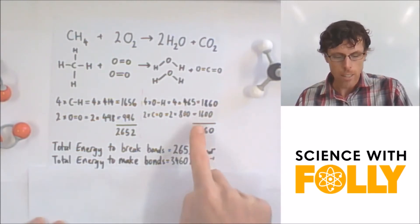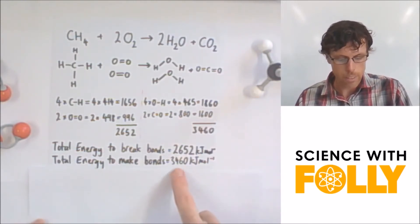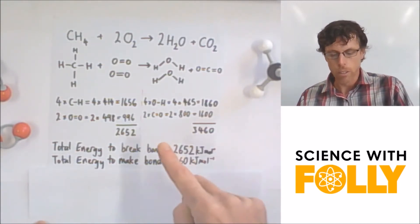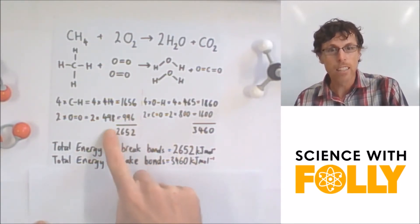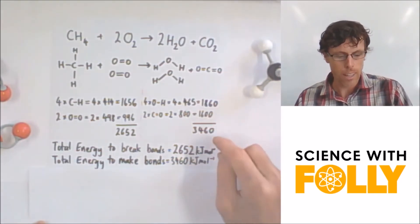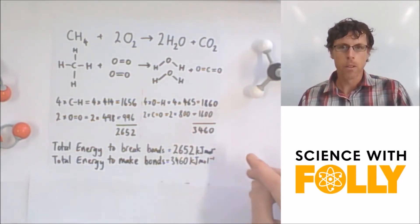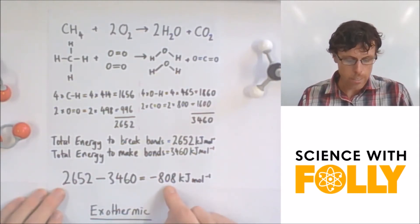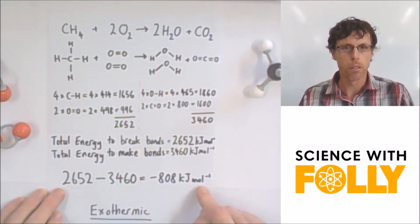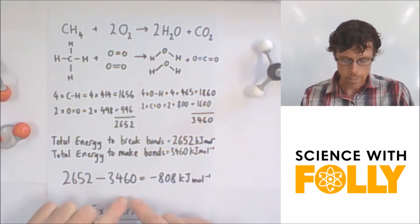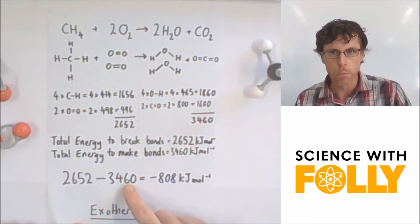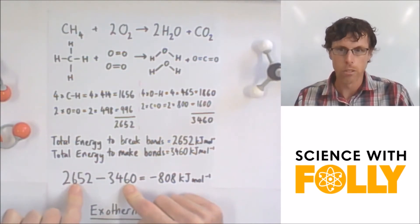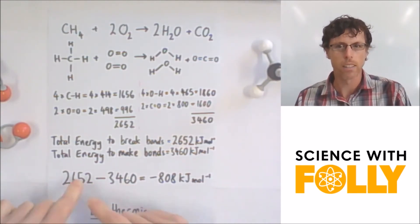The total energy to make these bonds released is 3460 kilojoules per mole. So we get the energy that is used and the energy that is released. We take them away, and as we can see, we get negative 808 kilojoules per mole. And that tells us that this is exothermic because more energy is released in making the bonds than is used up or absorbed in breaking the bonds.